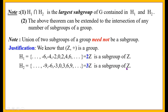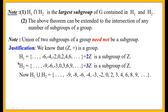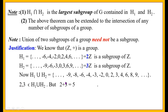Now H1 ∪ H2 consists of all elements of H1 and all elements of H2, writing any repeated element only once. This contains all even integers and multiples of three, that is the set {..., -9, -8, -6, -4, -3, -2, 0, 2, 3, 4, 6, 8, 9, ...}. Let us choose two elements: 2 and 3, both of which belong to H1 ∪ H2.